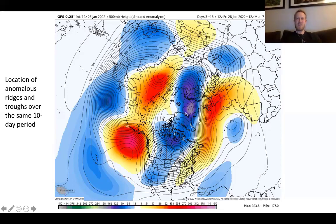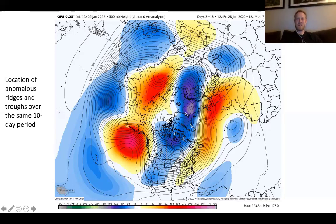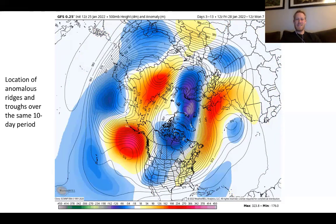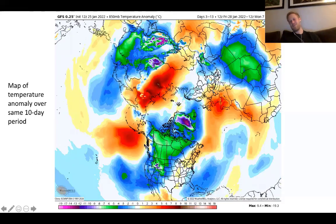It's been cooler than normal in much of the eastern U.S., but around here, where the flow is kind of coming up and over this ridge, we've mostly stayed dry. The temperature anomalies are in the same place as these ridges and troughs — with this ridge, it's been warmer than normal over the North Pacific and cooler than normal over much of North America. It all kind of fits together that way.